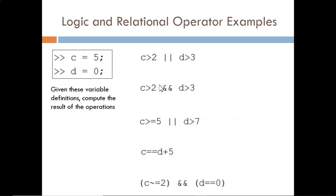The first step is to evaluate the relational operators individually. After that, we use the logic operator. Is C greater than 2? Yes, that's TRUE. Is D greater than 3? No, that's FALSE. So, we have TRUE ORed with FALSE, which gives an output of TRUE.